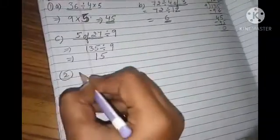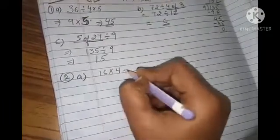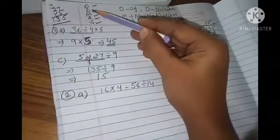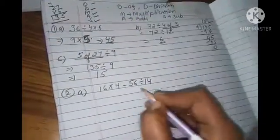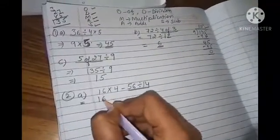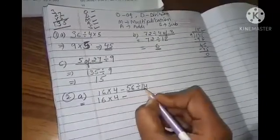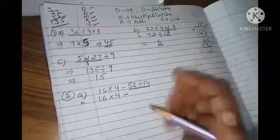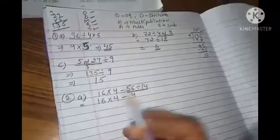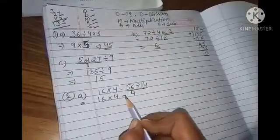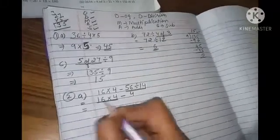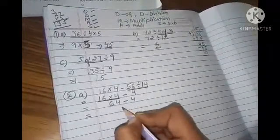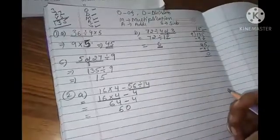Now, let us do question number 2 ka part a, which is 16 multiply by 4 minus 56 divided by 14. As you all know, students, we have to do division, multiplication, addition, subtraction. So, in this, we will divide the numbers first. 16 into 4 minus. 14 ki table mein 56 aata hai. 14 fours are 56. So, we will write 4 here. Now only two operations remain. Multiplication and subtraction. First we solve multiplication. 16 fours are 64 minus 4. What answer you will get? 64 minus 4? 60. And you have completed your question. Easy, right?